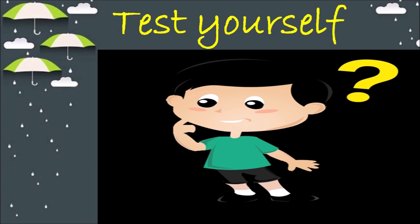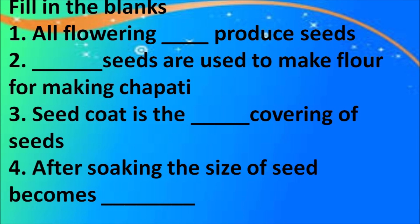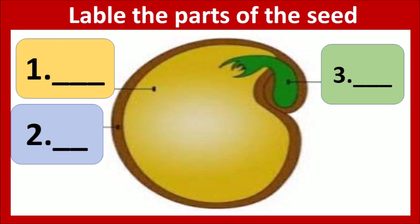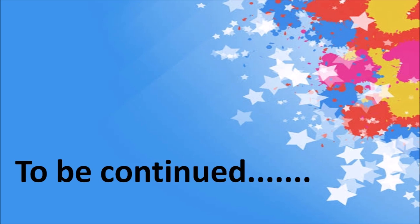Children, I hope you have listened and watched the video very carefully and understood all the topics. So it's time to test yourself. Here is a simple worksheet for you — just go through these simple sentences, and if you face any problem, just rewind the video and you will find all your answers. Can you name the different parts of the seed? Let's have a quick recap: a seed has a potential to grow into a new plant, it uses the food stored in it to grow into a seedling, and we have discussed the processes of soaking and sprouting in detail. In the coming part of the video, we will be discussing more about seeds. Till then, take care. Bye-bye.